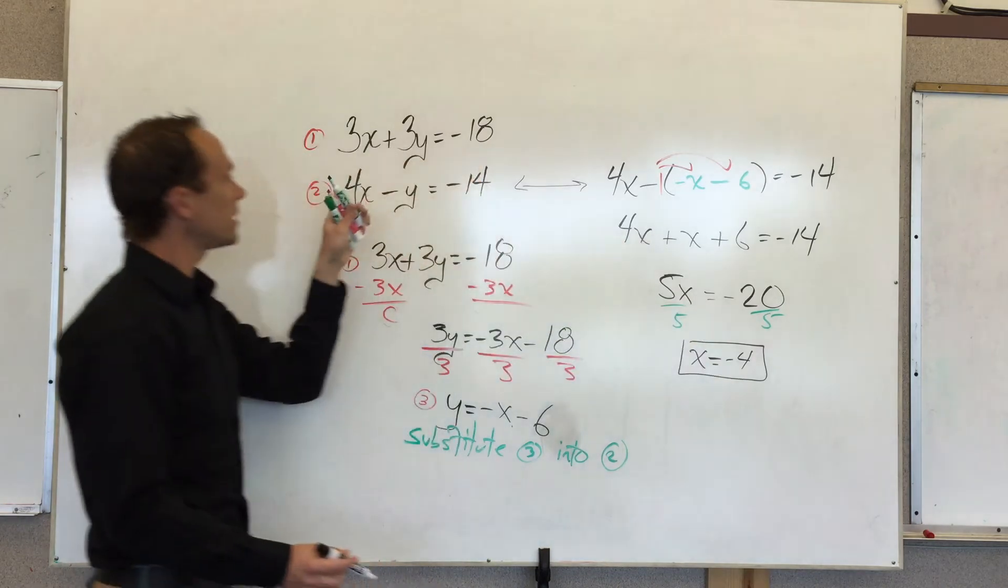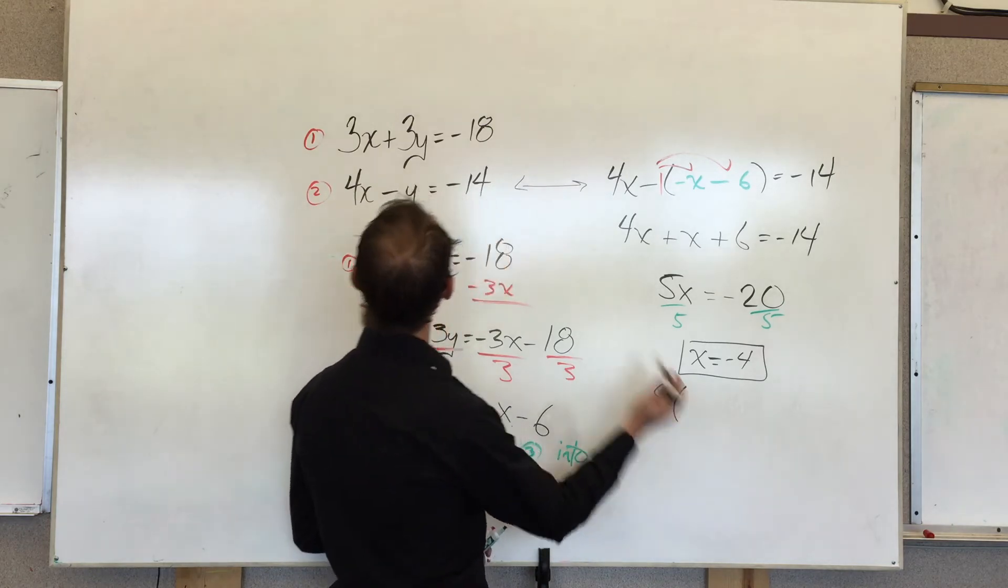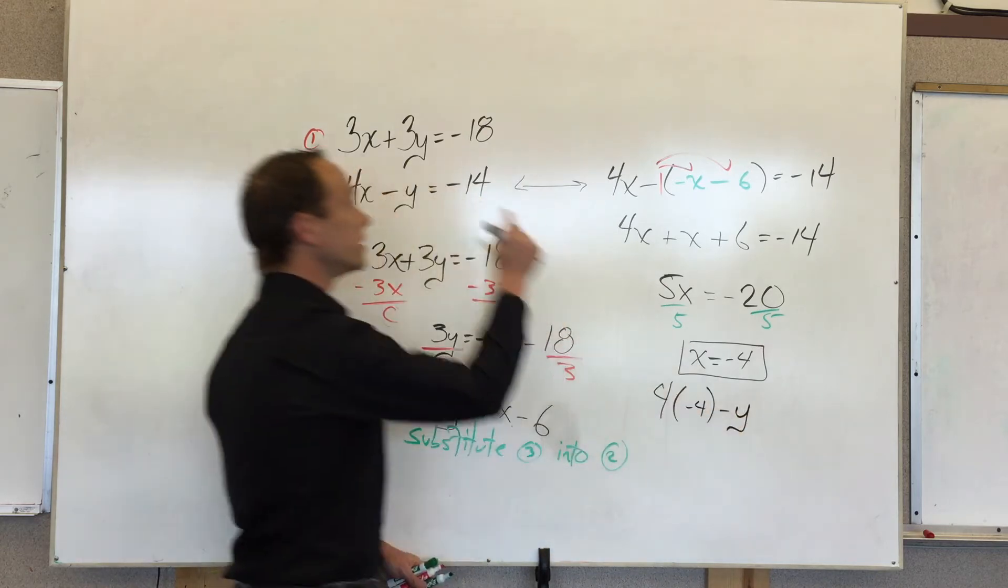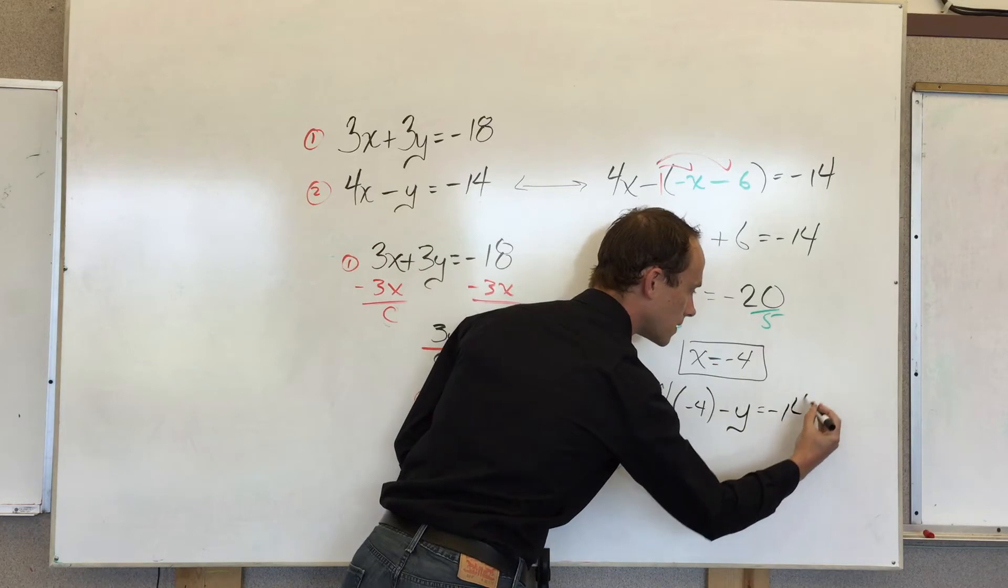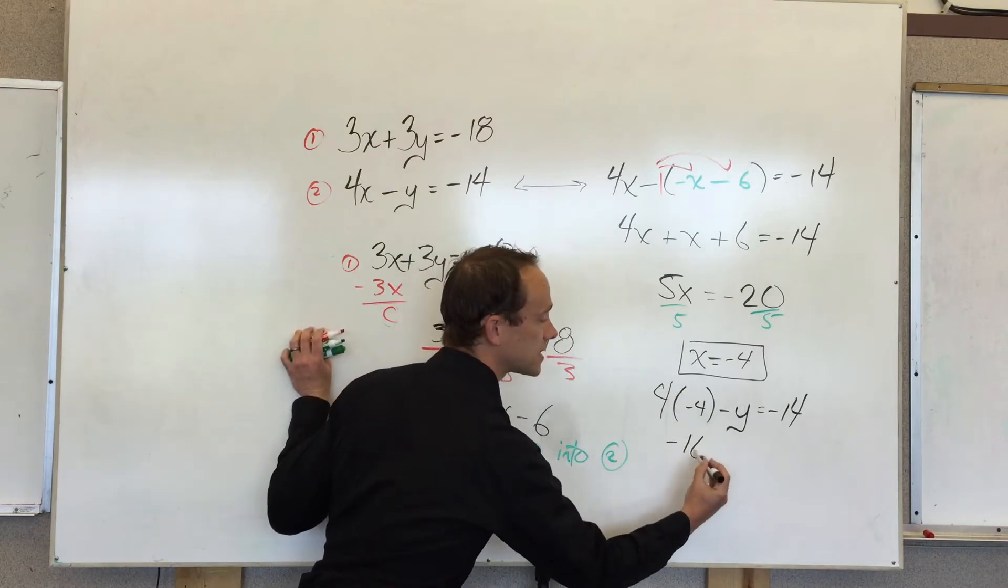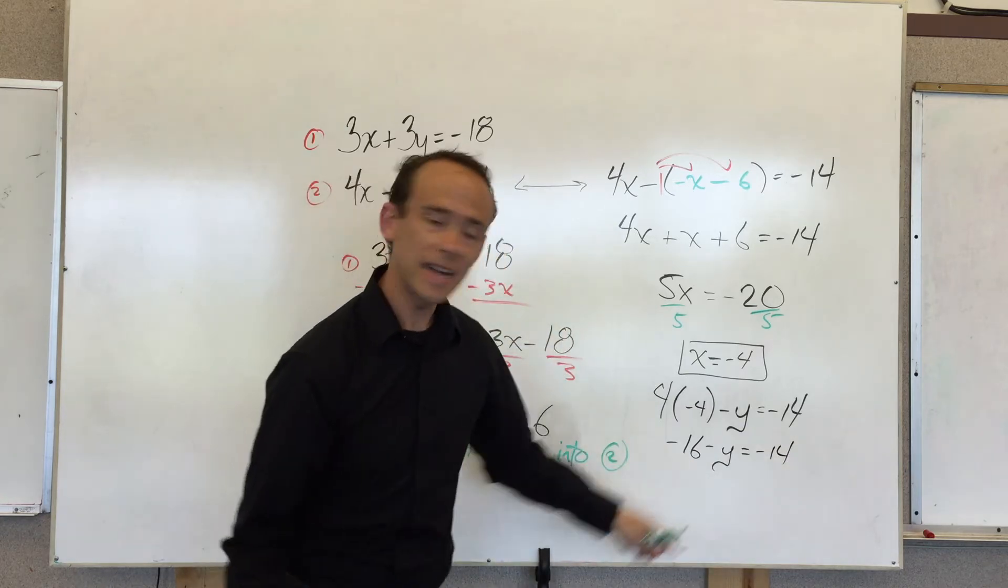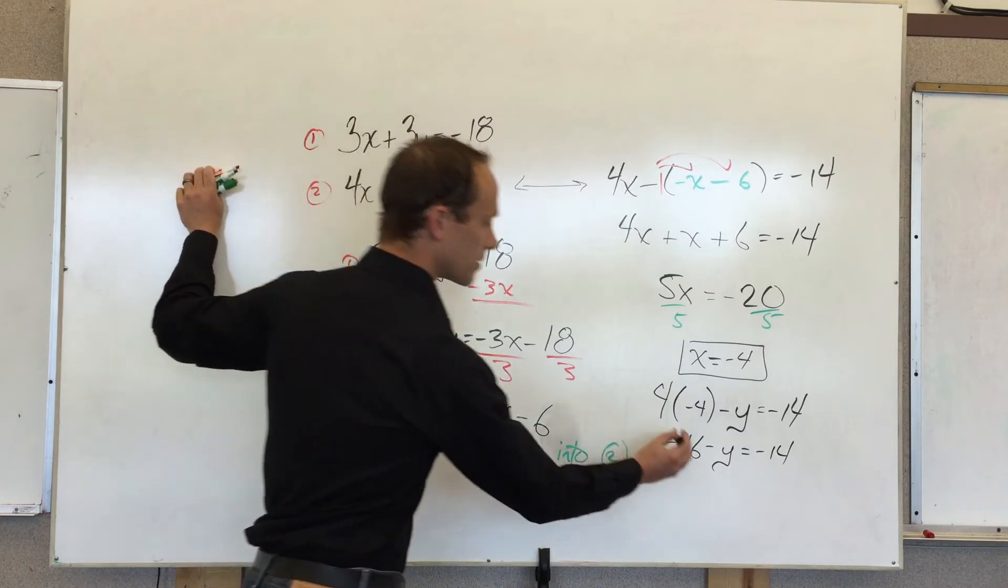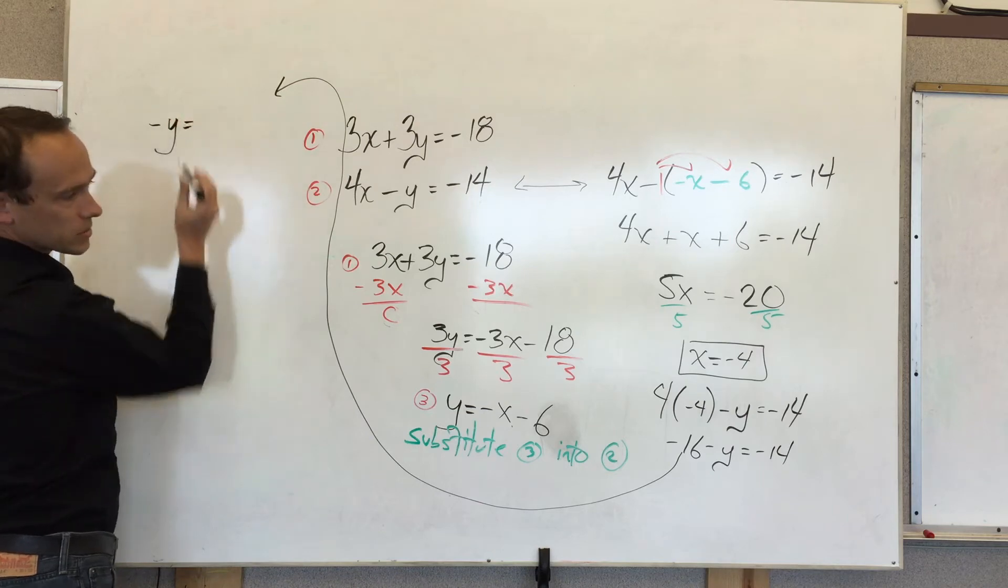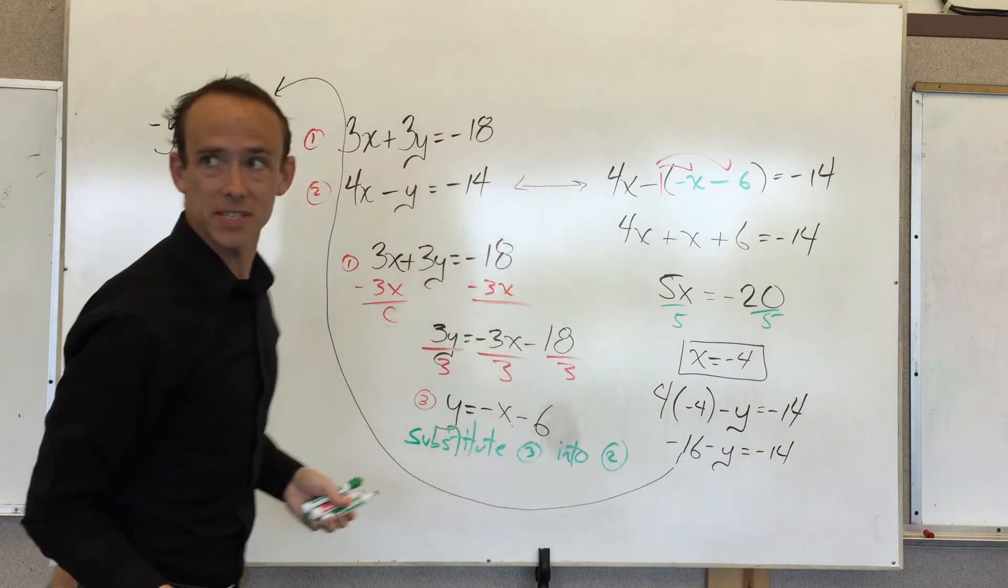So I'm going to take x equals negative 4 and I'm going to plug it in right there. So I'm going to go 4. Instead of writing x, I'm going to write negative 4 minus y is equal to negative 14. We're almost done. We can see it. I can sense it. So 4 times negative 4 is negative 16 minus y is equal to negative 14. I've got to add 16 to both sides. I'm going to do it right here. I'm just going to put a little arrow.